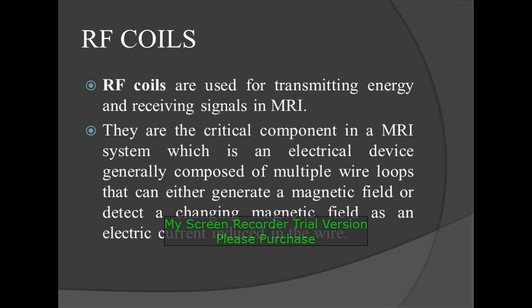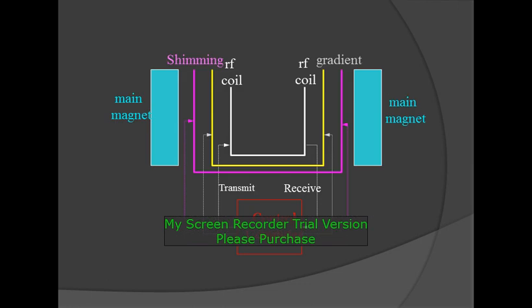RF coils are used for transmitting the energy and receiving the signals in MRI. They are a critical component in an MRI system — an electrical device generally composed of multiple wire loops that either generate a magnetic field or detect a changing magnetic field as an electrical current induced in the wire. Inside the RF coil, the RF coils are enclosed by the shimming coils, gradient coils, and the main magnet.